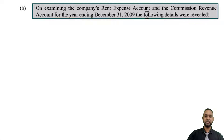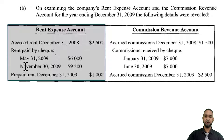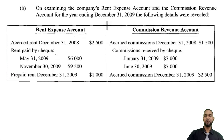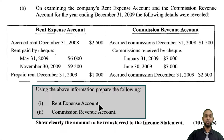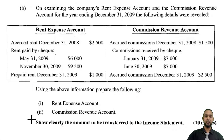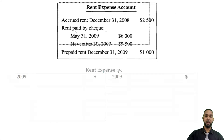On examining the company's rent expense account and commission revenue account for the year ending December 31st, 2009, the following details are revealed. Now what they want us to do is, using the above information, prepare the rent expense account and the commission revenue account, and show clearly the amount to be transferred to the income statement — 10 marks, so that's about 5 marks per account. Let's go first with the rent expense account.